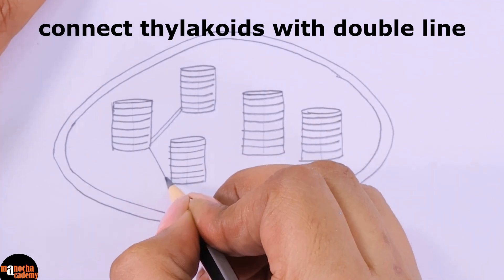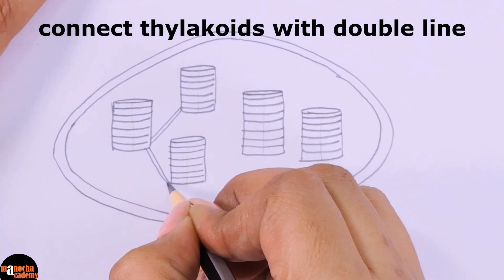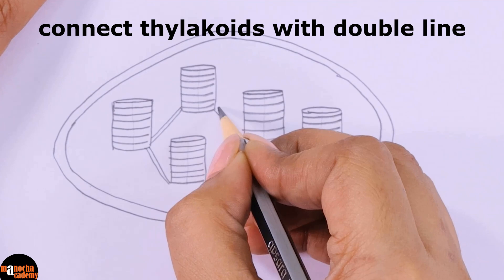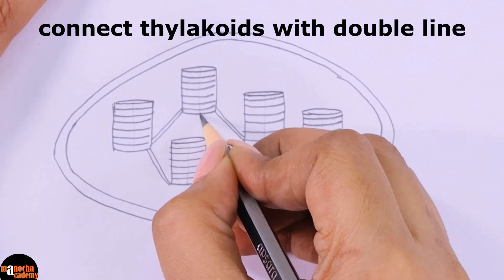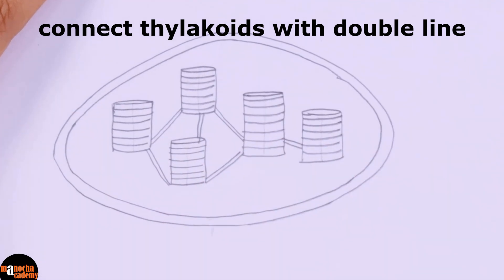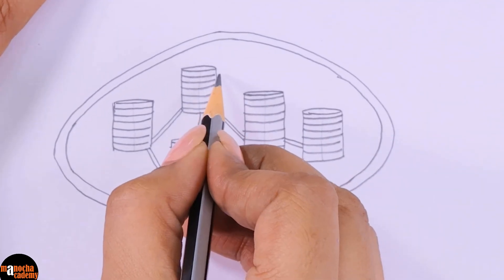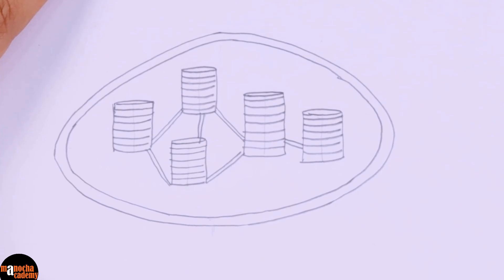We are going to connect them with double lines. These connections you can do as you want. But make sure that every grana is connected to at least one granum. So that is how the structure looks like now.